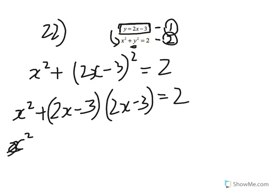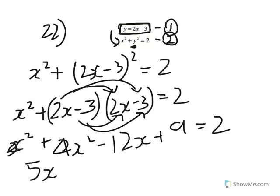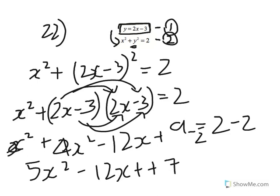Expanding (2x minus 3)²: you get 4x² minus 6x minus 6x, which is minus 12x, plus 9. So combining everything gives 5x² minus 12x plus 9 equals 2, and subtracting 2 from both sides gives 5x² minus 12x plus 7 equals 0.